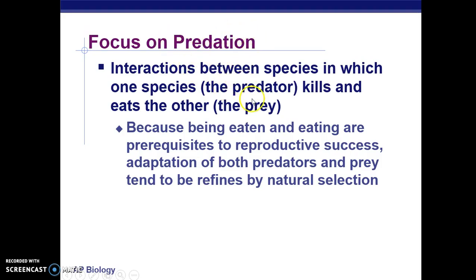We're going to focus on adaptations of predator and prey — specifically how prey adapt to avoid being eaten by the predator, and then how the predator adapts along with the prey. That idea is called co-evolution. It's natural selection in action — if the prey doesn't develop ways to escape the predator, it may eventually be eliminated from the population.